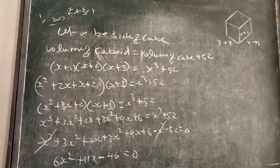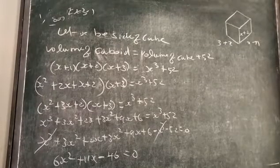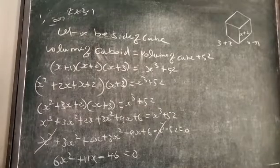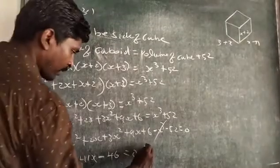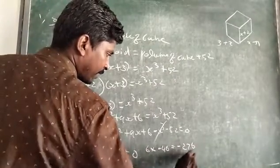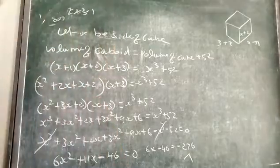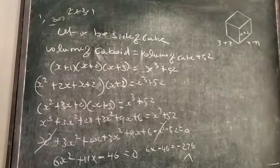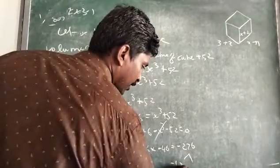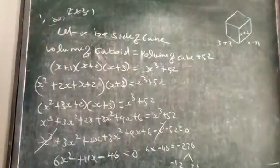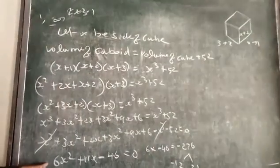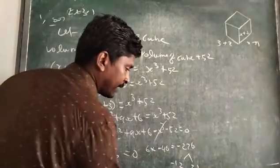So the equation becomes 6x² + 11x - 46 = 0. Now, 6 times minus 46 is minus 276. We need two factors that multiply to give minus 276 and add to give 11. So we select minus 12 and plus 23.